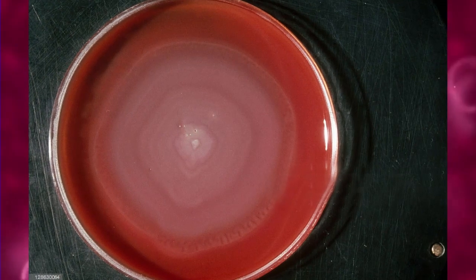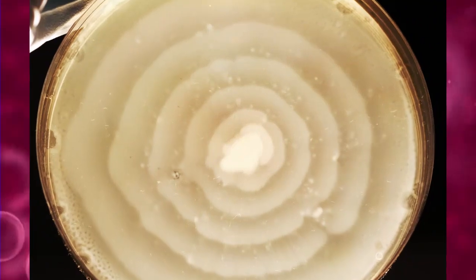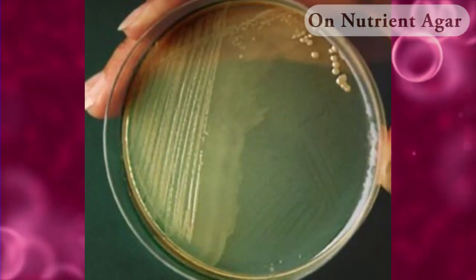Swarming is described as the formation of concentric zones of bacteria growth. Hope this video was helpful to you for getting an idea about Proteus colony morphologies.